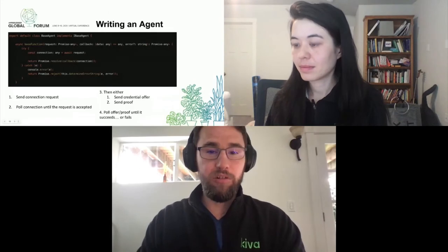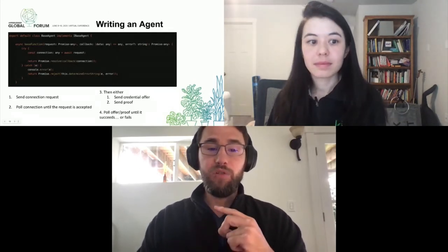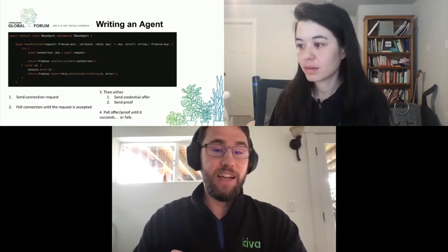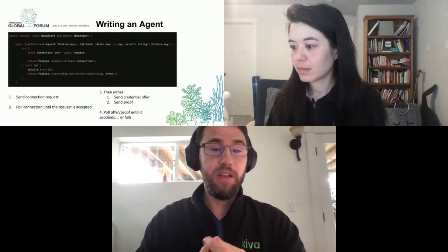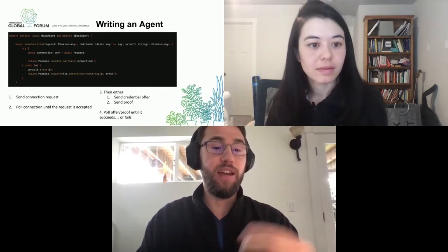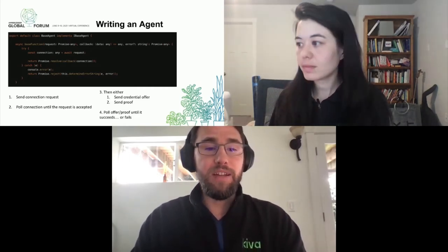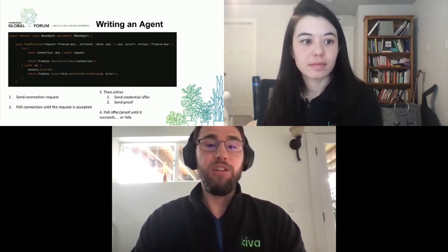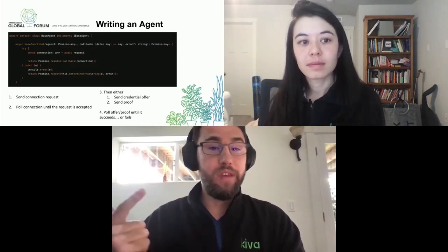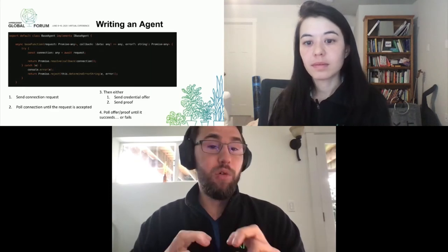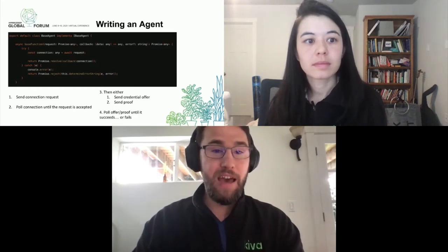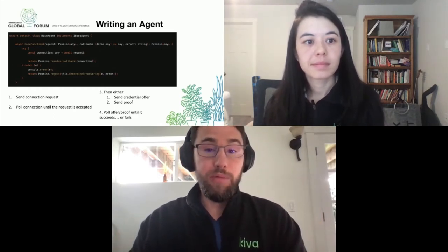These are just static values, but the agent class is a little more in-depth. There are four steps you need to do to complete your Aries process. The first is send a connection. Then you have to check the status of that connection request until it switches to accepted. Once you've done that, send your credential offer or your proof request. Then again, check the status until you get a yes or a no from your server. The agent class is designed to abstract these processes so that we can solve the source and schema problem — we don't know what kind of server response means rejected or accepted from any given server, and we don't know what controller URL we should be aiming at for requests or what to do with the response when we receive it.